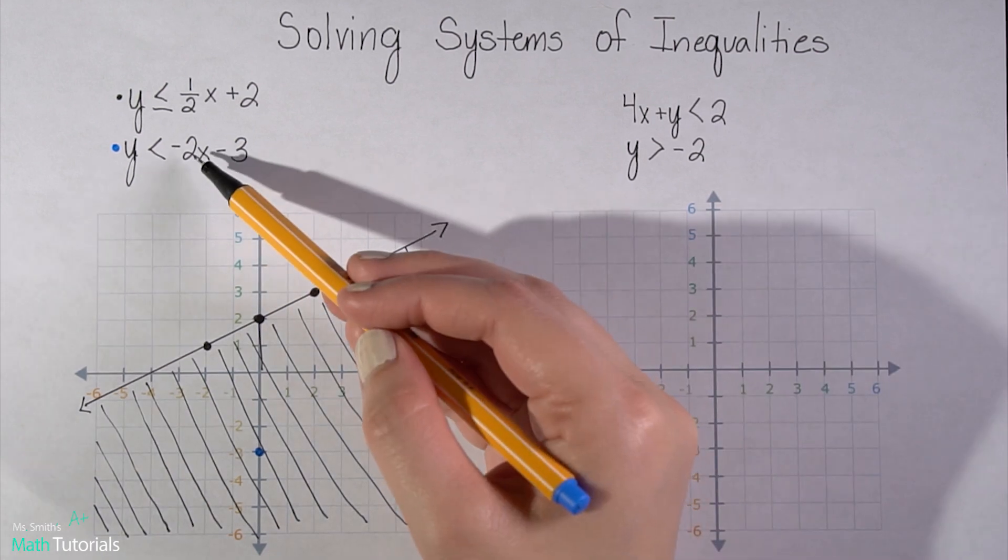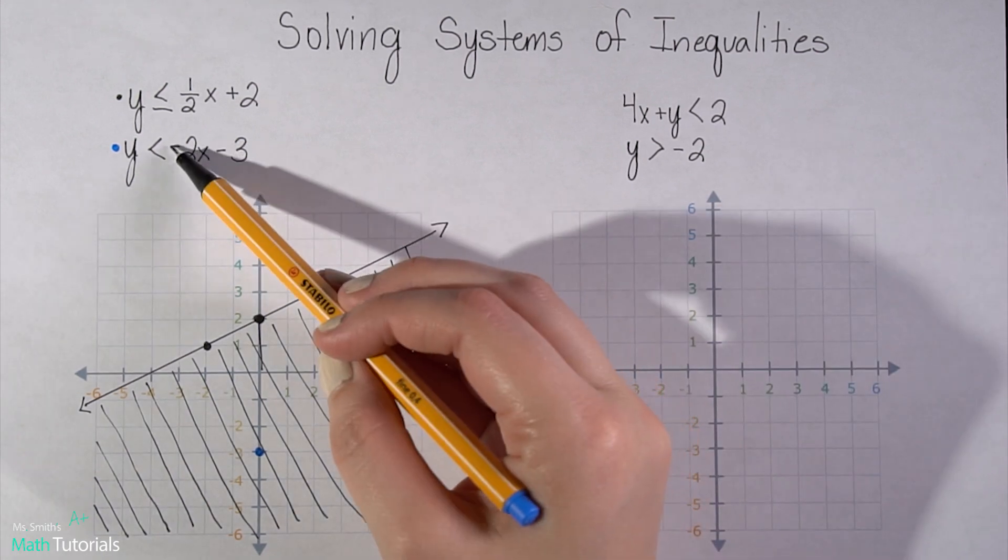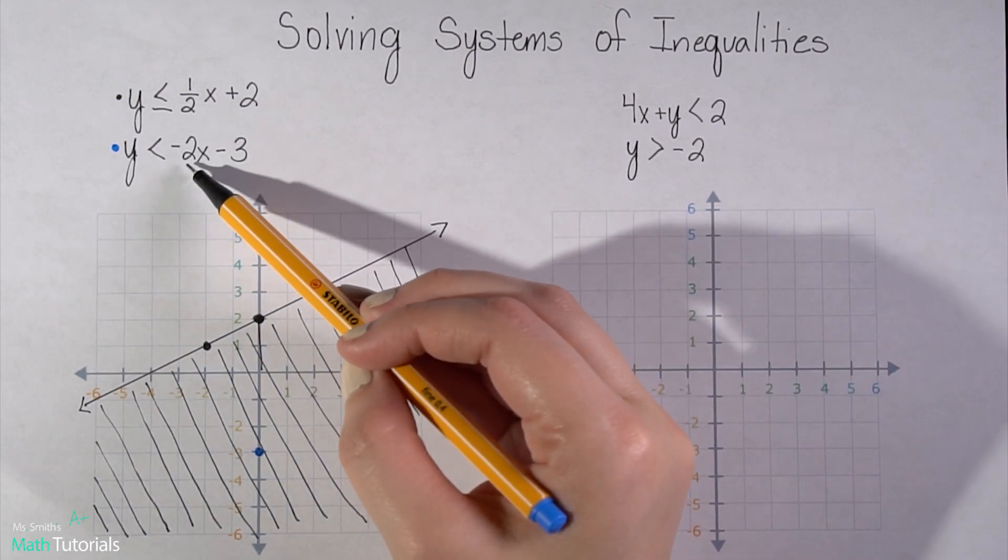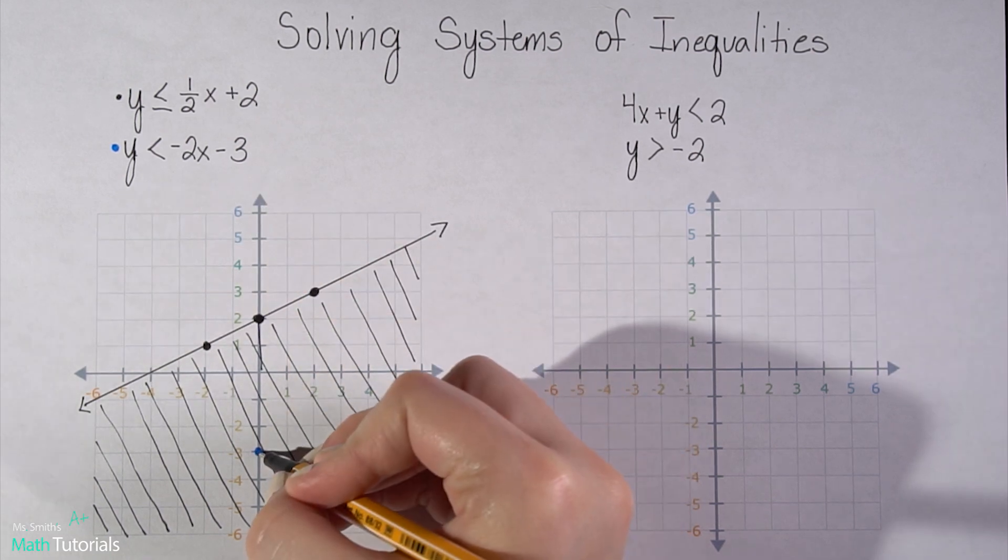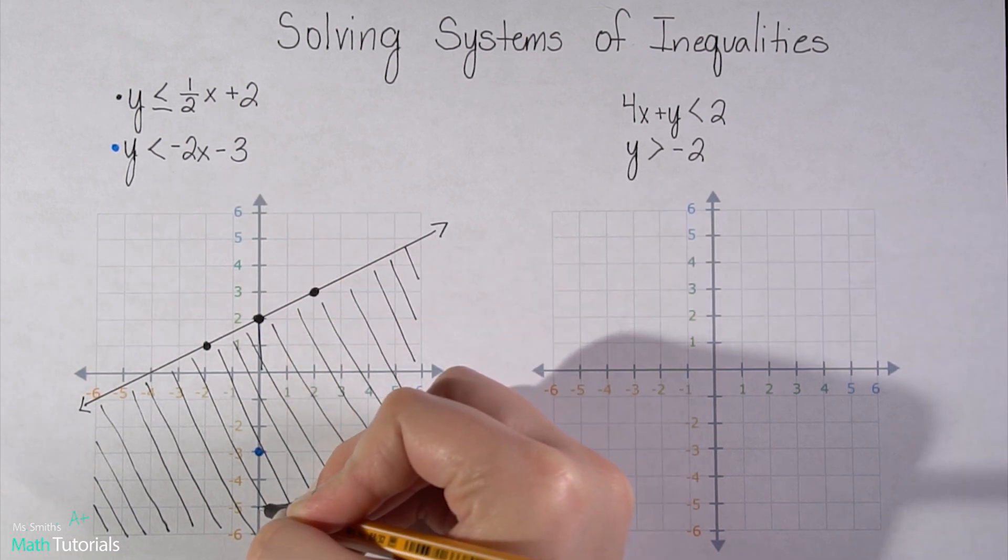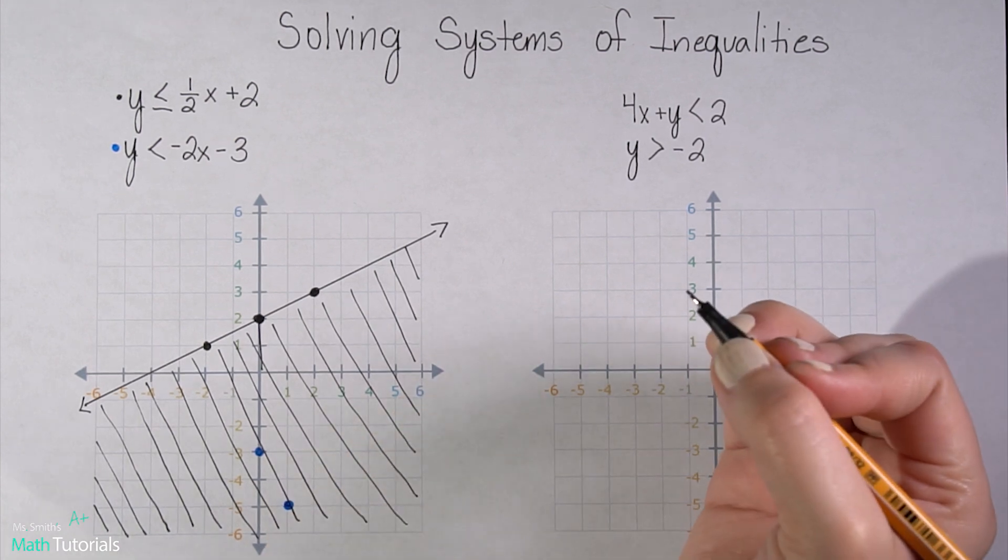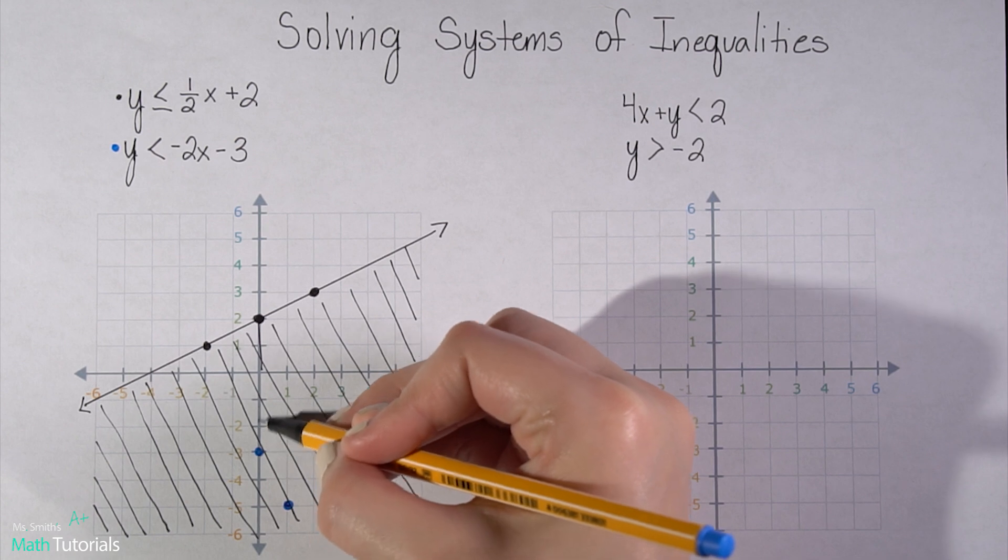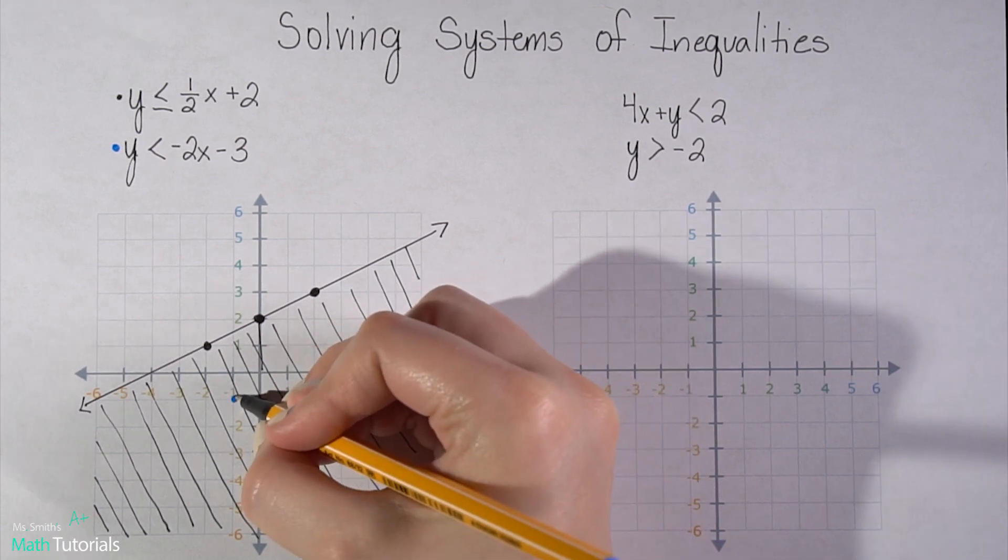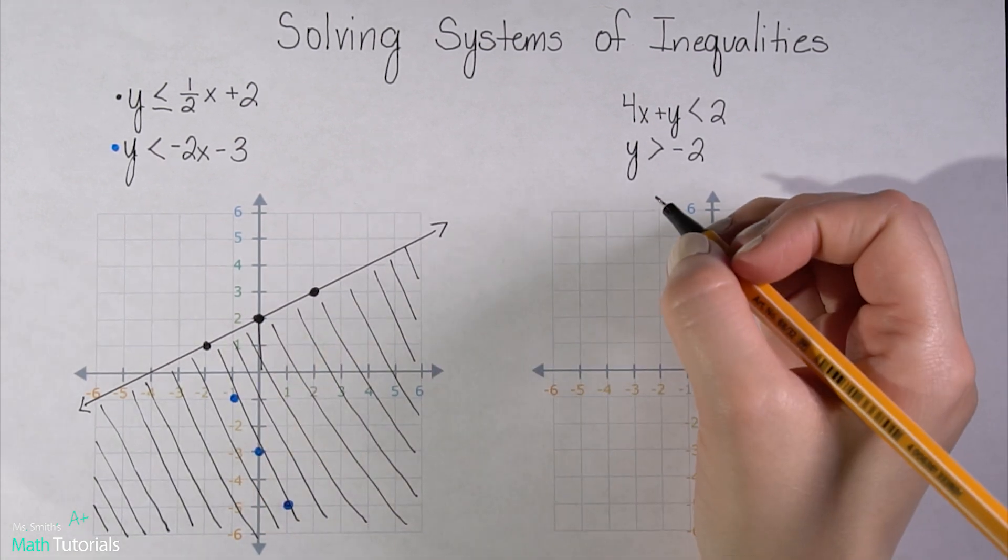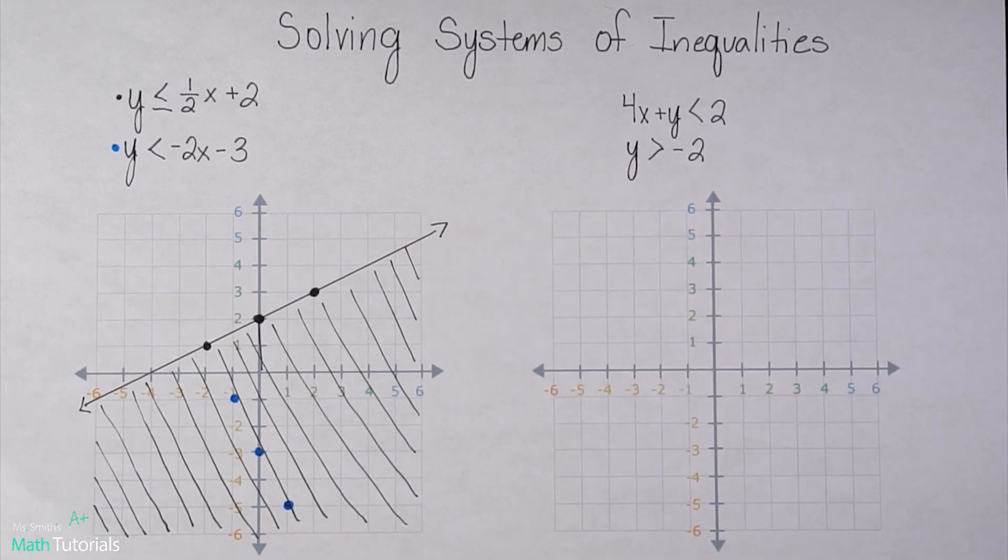And from there, my slope is going to tell me how to move. So this is negative two over positive one. So that means I'm going to move down two over one. And I can also do the reverse. I can move up two, left one.